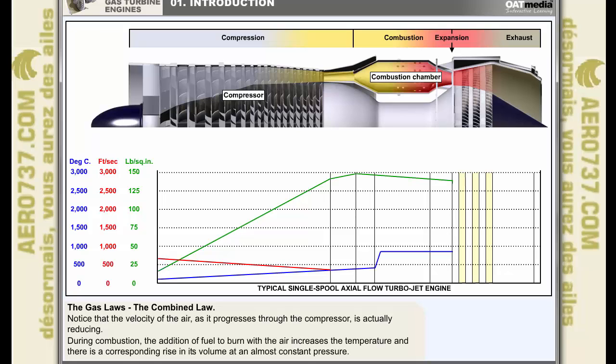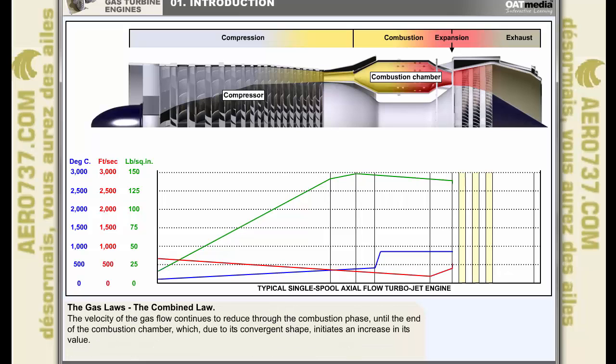During combustion, the addition of fuel to burn with the air increases the temperature, and there is a corresponding rise in its volume at an almost constant pressure. The velocity of the gas flow continues to reduce through the combustion phase until the end of the combustion chamber, which, due to its convergent shape, initiates an increase in its value. The reason for this will soon become apparent.